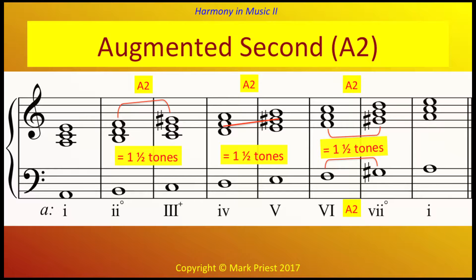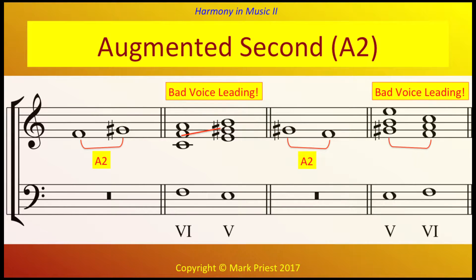That said, we can approach the challenge of the Augmented Second Interval. This is the melodic distance from the 6th to the 7th degrees of the Harmonic Minor Scale — an Augmented Second. A melodic Augmented Second Interval is hard for a choir or chorus of voices to sing in tune together. This is especially so in the ascending direction. So, in the Minor Mode, we must avoid writing the 6th and 7th scale degrees for the same voice in immediate succession.